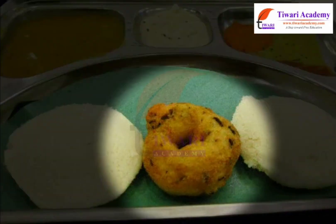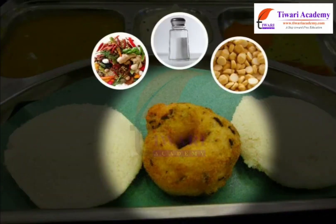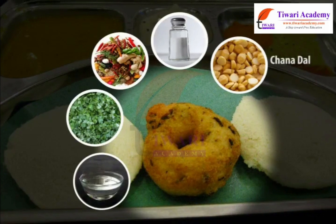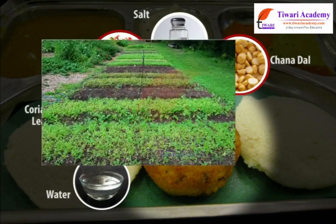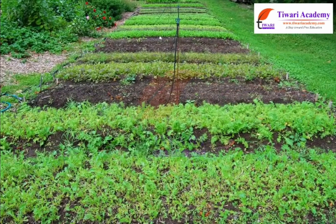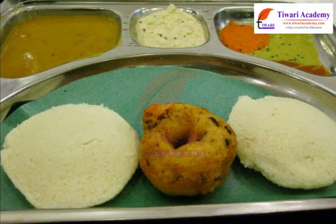Vada is made up of chana dal, salt, spices, coriander leaves and water. Chana dal, spices and coriander leaves are obtained from plants.